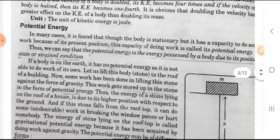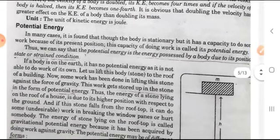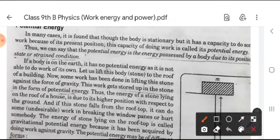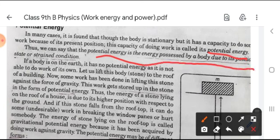What is potential energy? Potential energy is the energy of any object due to its position — that is called potential energy. As the definition is given here: potential energy is the energy possessed by a body due to its position, state, or strained condition. This is the definition of potential energy.